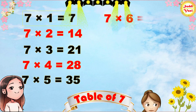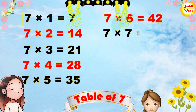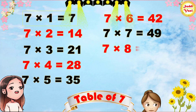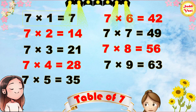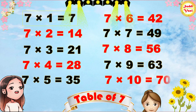7 6s are 42, 7 7s are 49, 7 8s are 56, 7 9s are 63, 7 10s are 70.